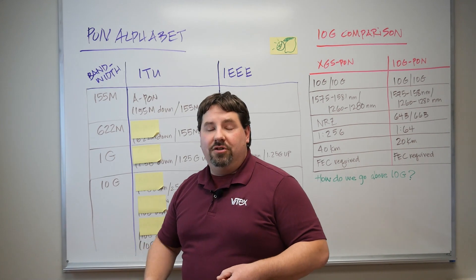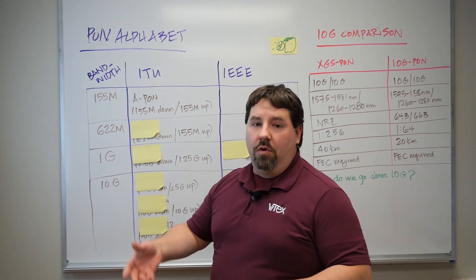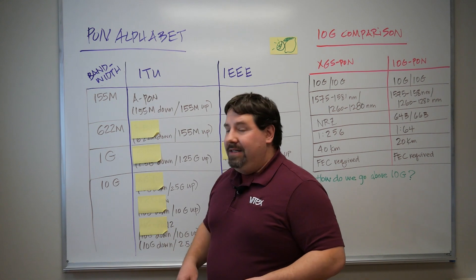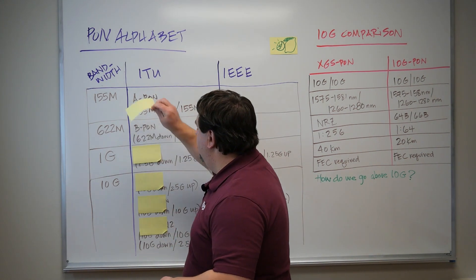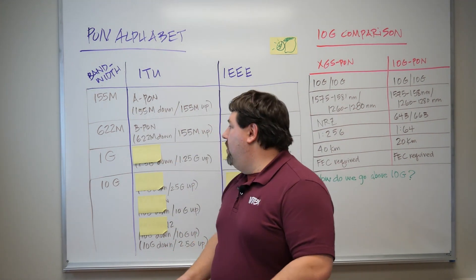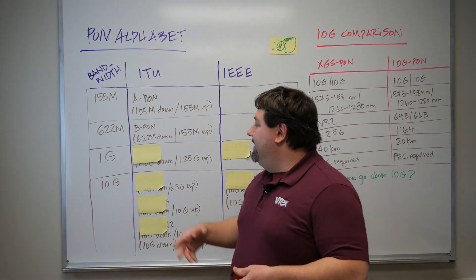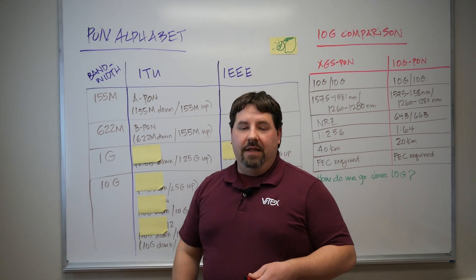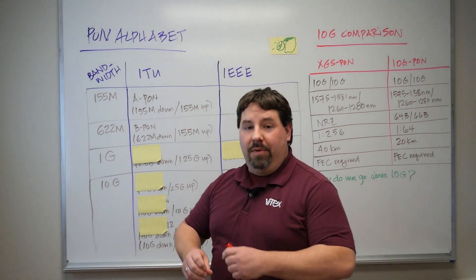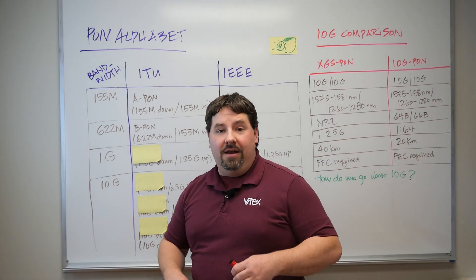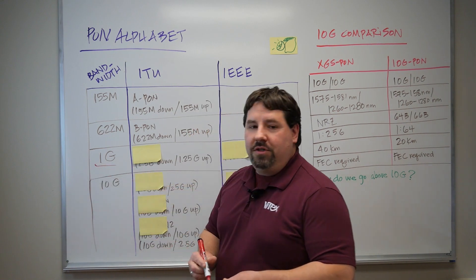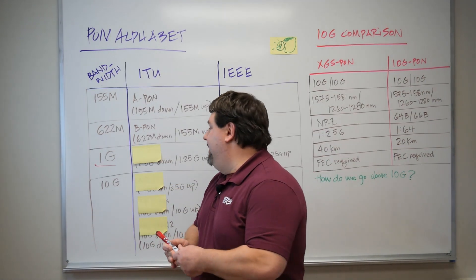Of course, more applications came out, more fiber to the home, and there was a need for greater speed. So this quickly developed into our next letter: B-PON. Here we increased our downlink speed, but our uplink speed remained relatively the same. But this still wasn't enough for users — they still wanted more. So we started pushing the boundaries past megabit into gigabit.